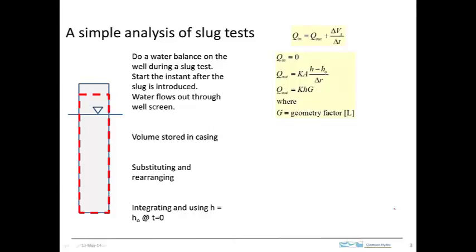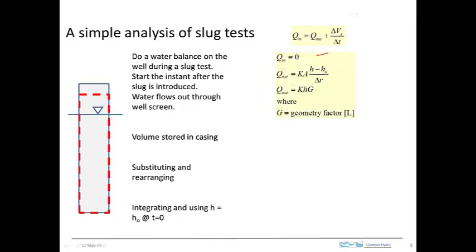For this particular scenario, the volumetric flow rate in is zero — we start the analysis after the slug is already in, so there's no water flowing into the control volume. The water that flows out depends on the head gradient. Here's the head profile: H₀ is the initial head, H is the head in the well after slug-in, and the water profile shows a slope — that's the head gradient.